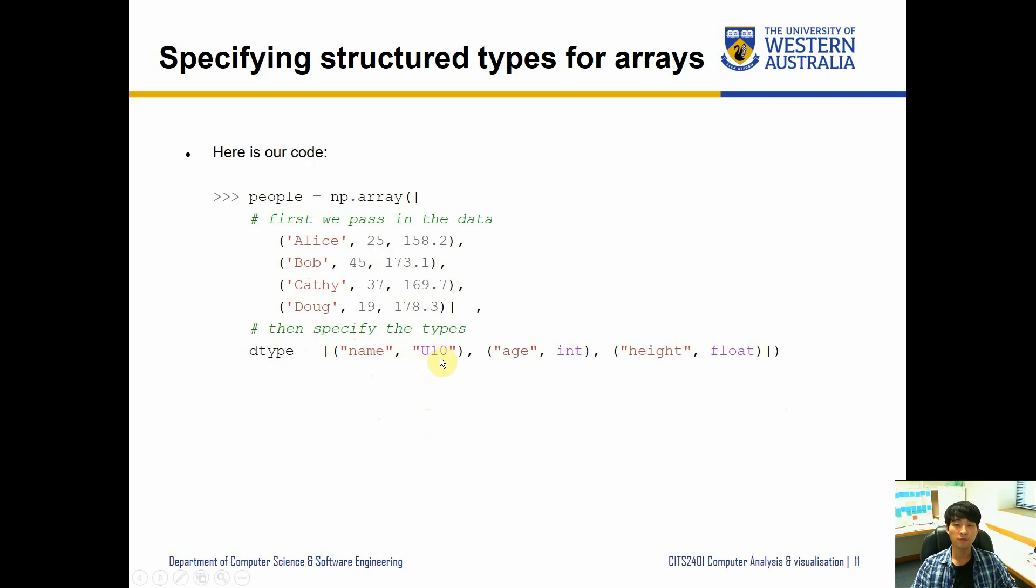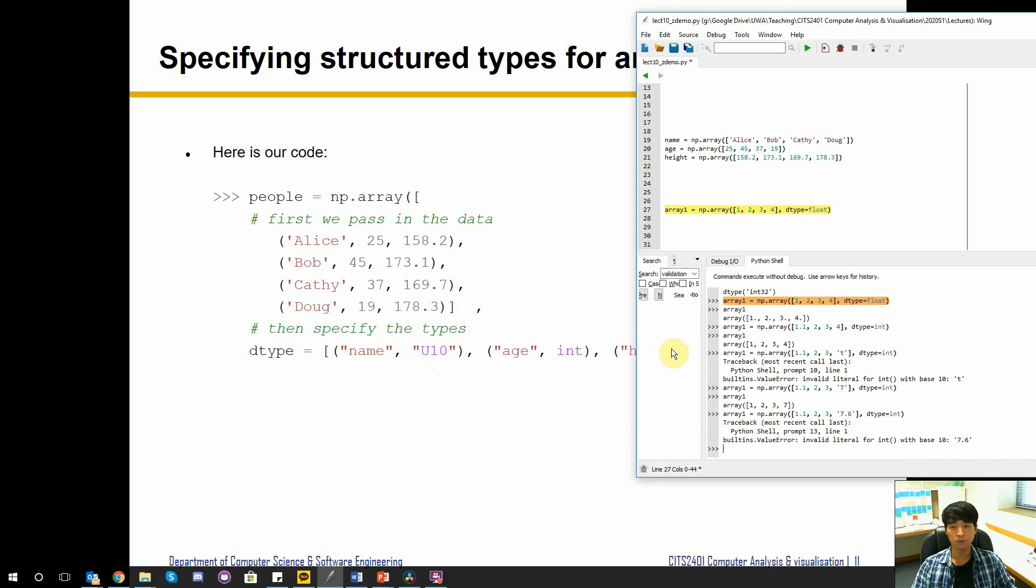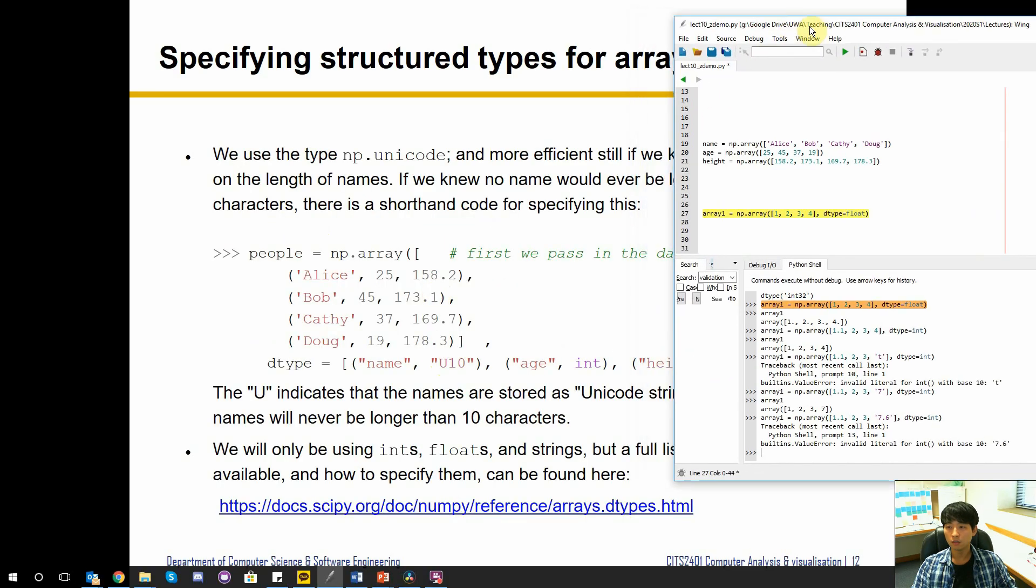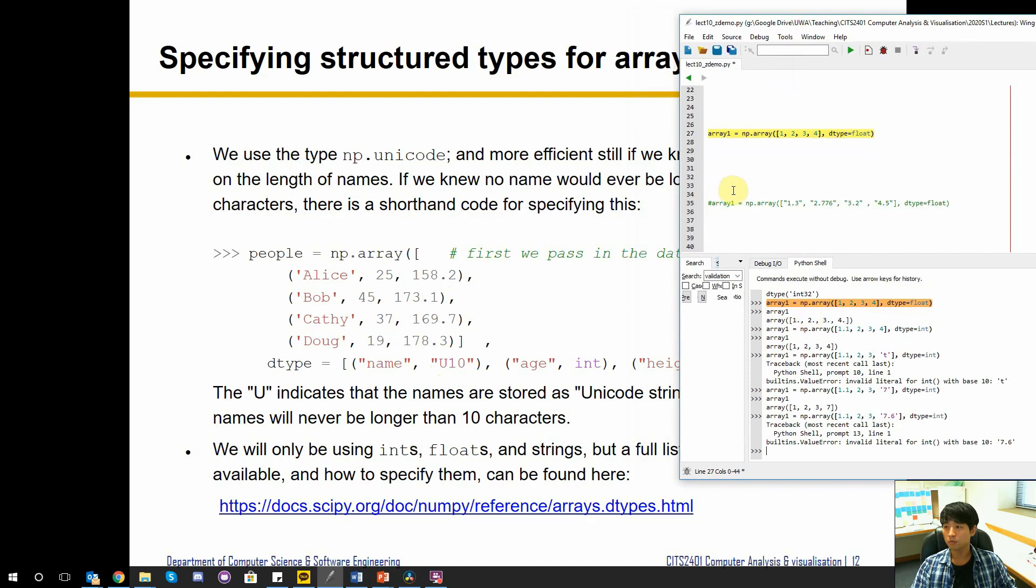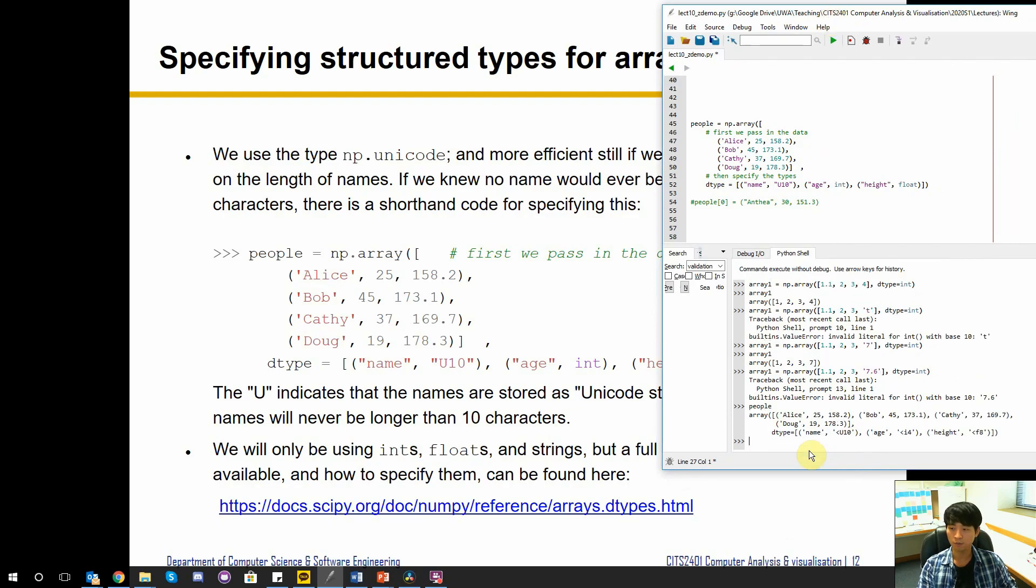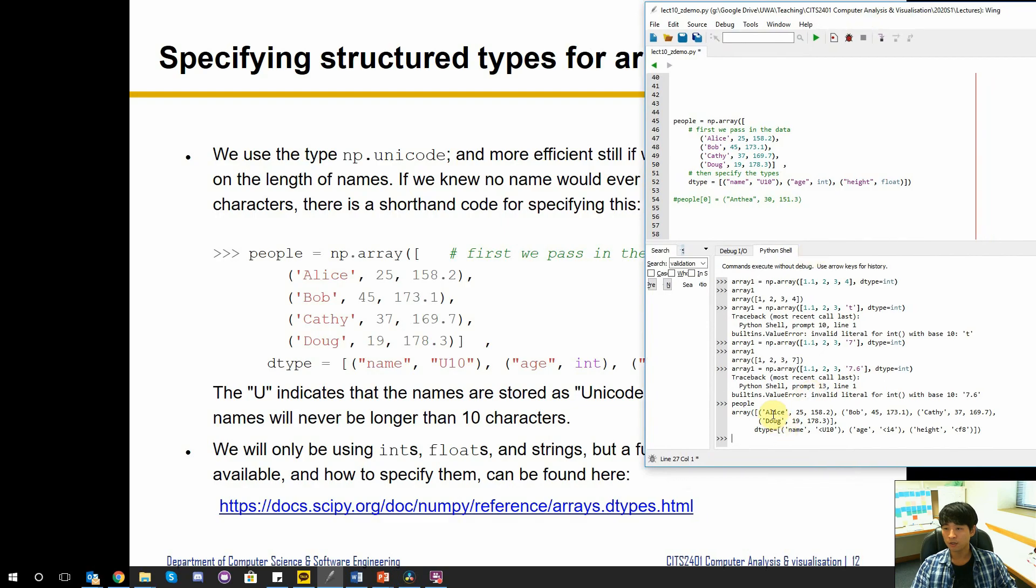The dtype will go by the columns. U10 is specifying that this is going to be unicode, and 10 means the value after the type means the number of characters. It thinks we're saying we will probably have up to 10 characters max. Age is going to be integer and height is going to be float.